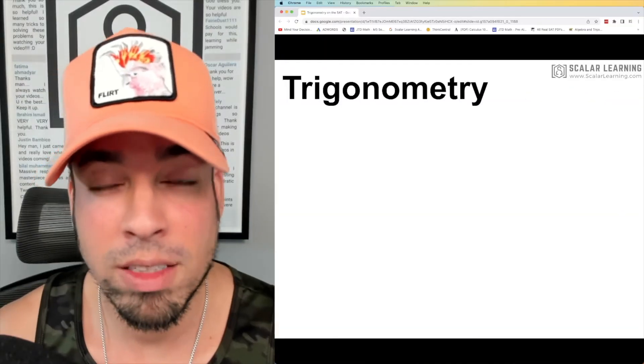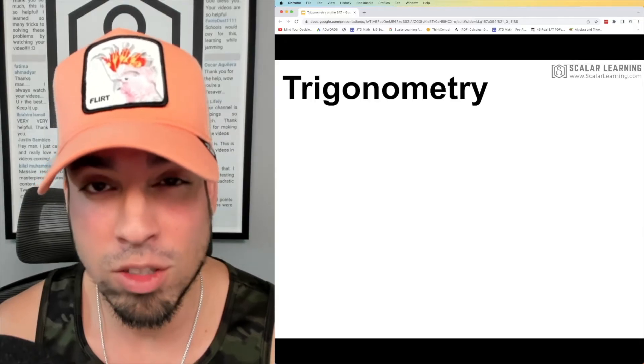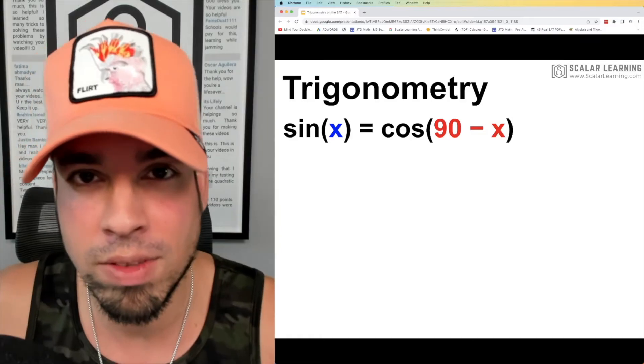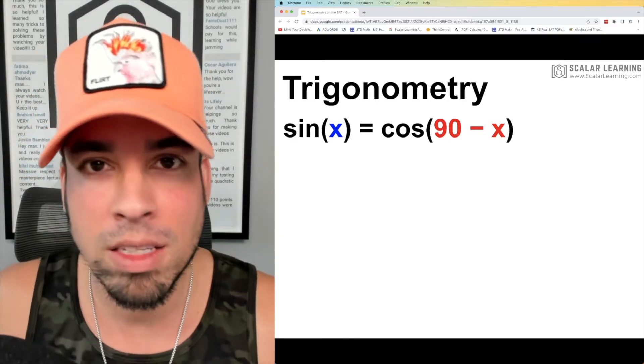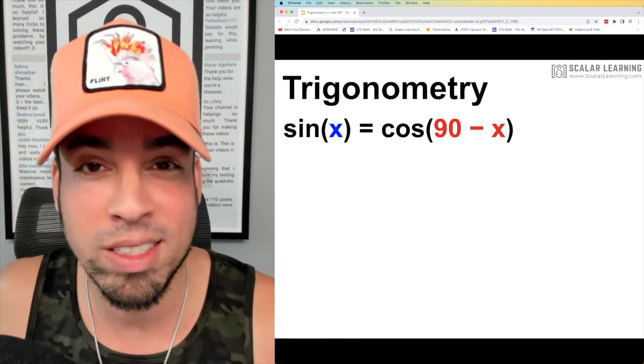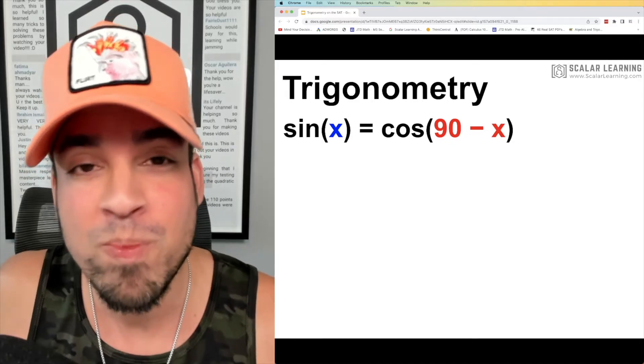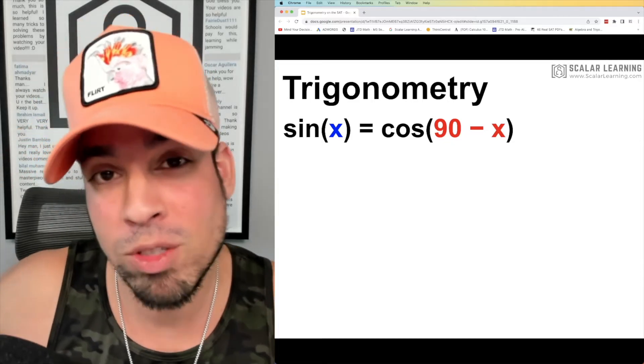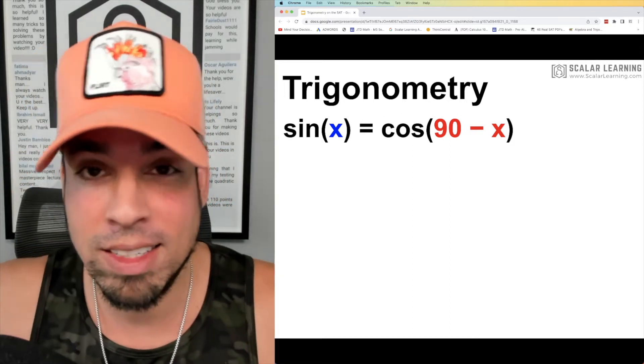Another important thing to recognize that they always test on the SAT in terms of trigonometry is this relationship: sine of an angle equals cosine of the complement of that angle. And this a lot of times will manifest in a way where they'll say, 'Hey, we have a triangle with two angles other than the right angle—let's just say we have A and B—and they'll say sine of A is equal to one half, what's cosine of B?'